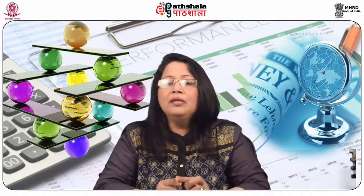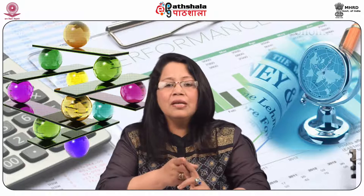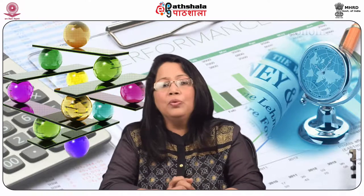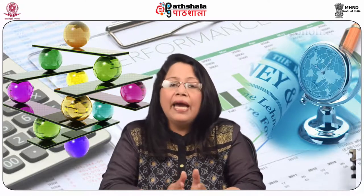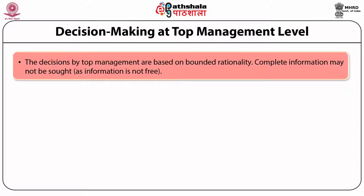Budget allocation is done according to bargaining skills. Three things are taken into consideration while allotting the budget: first, goals of the firm; second, availability of resources; and third, bargaining skills of the head of each department. Top management keeps some funds aside which can be used at its own discretion at any stage as per requirement. The decisions by top management are based on bounded rationality — complete information may not be sought as information is not free, and collecting information about all alternatives can be uneconomical time-wise too.